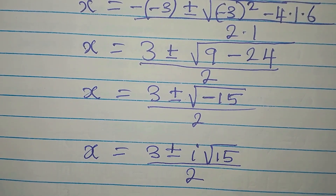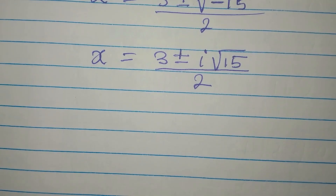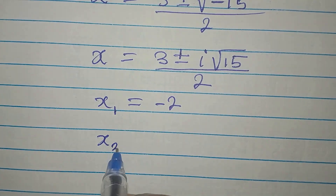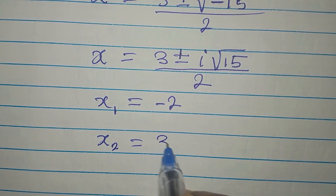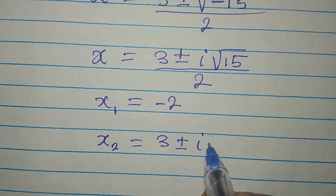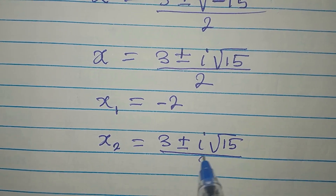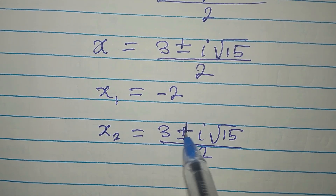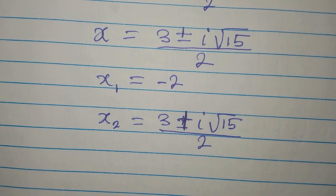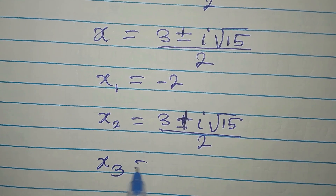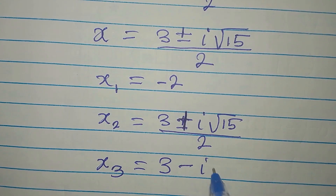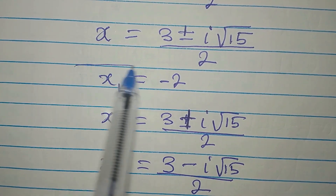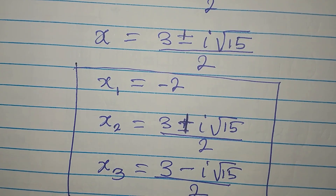This is a 2-in-1 solution. Let's bring the three solutions together. Our x₁ is negative 2. Our x₂ is 3 plus i root 15, divided by 2. And the third solution, x₃, is 3 minus i root 15, divided by 2. These right here are the three solutions. Thank you for watching.